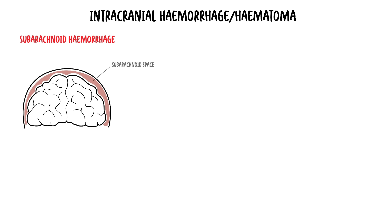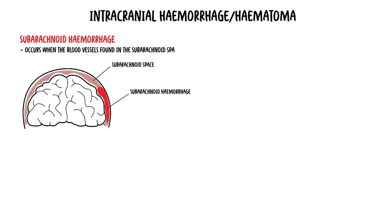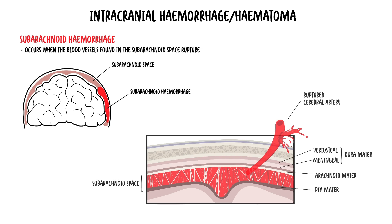The next clinical anatomy is a subarachnoid hemorrhage. This occurs when blood vessels found in the subarachnoid space — the vessels that supply the brain parenchyma itself — rupture; these are typically arteries.